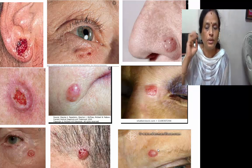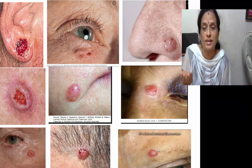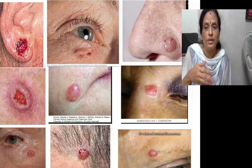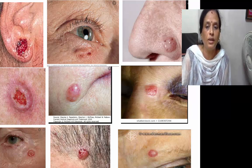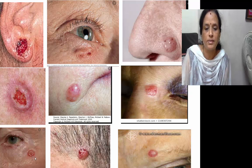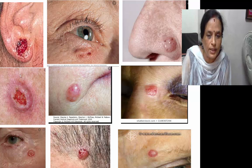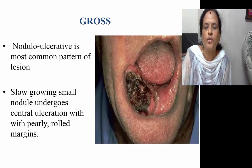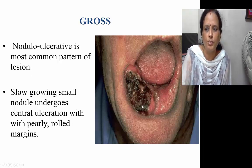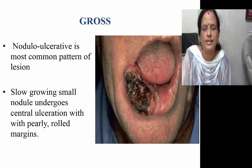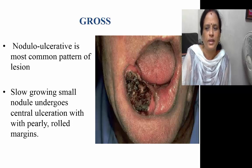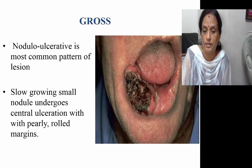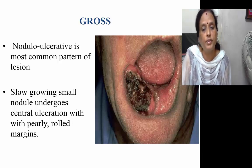Another feature you can observe — how do these tumors appear? What is their gross appearance? Most of them are nodular. The nodule may ulcerate, and then we call it the nodulo-ulcerative pattern — that is the most common. Sometimes it can present solely as an ulcerative pattern or solely as a nodule which may ulcerate later. These two pictures show very nicely ulcers on their surface; the rest appear as nodules.